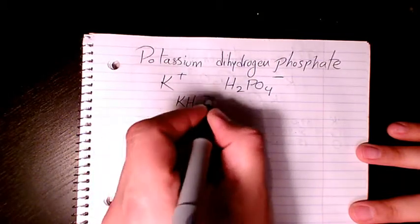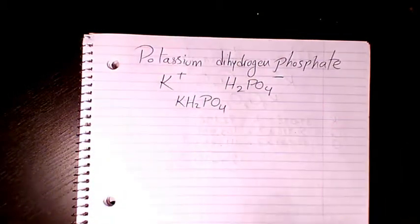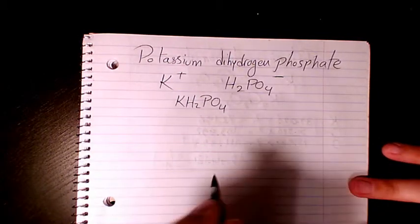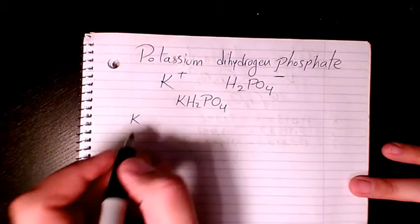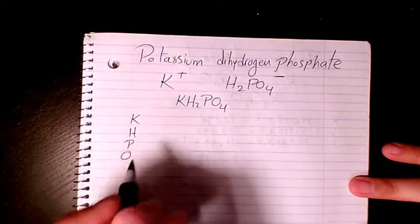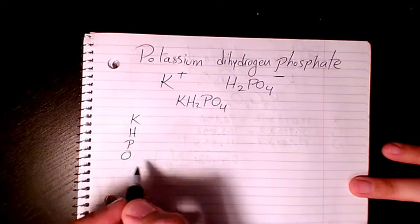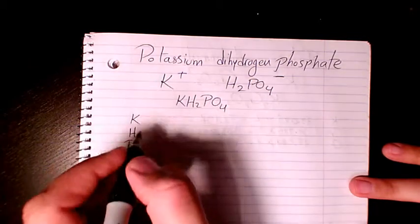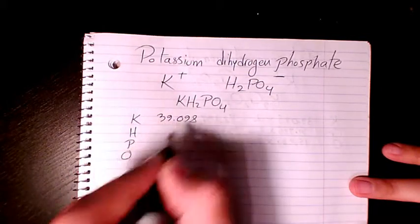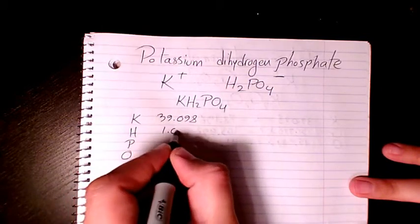Now if I want to find out the molar mass, I need to first of all list all the elements which is K for potassium, H for hydrogen, P for phosphorus, and O for oxygen. The atomic mass from periodic table: potassium is 39.098, hydrogen is 1.008, phosphorus is 30.974, and oxygen is 15.999.